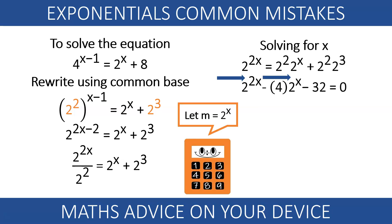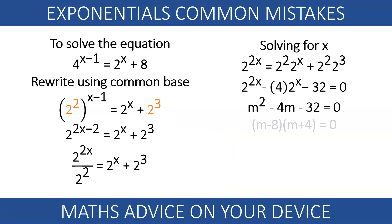Letting m equals 2 to the x leads to the quadratic m squared minus 4m minus 32 equals 0. We factorize, we solve for m, and we use these solutions to find the solutions for x.